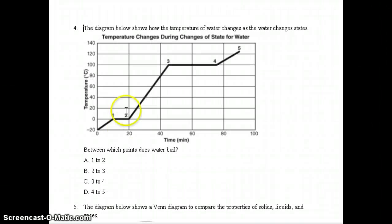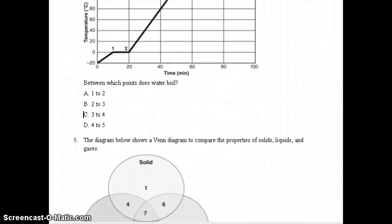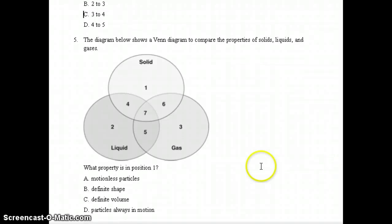Number 4, the diagram below shows how the temperature of water changes as the water changes states. Question asked, between which points does water boil? If you look at the graph carefully, you will see that water boils. If you know that it boils at 100 degrees Celsius, you see that it boils between points 3 and 4. So that should have been letter C. Number 5, it says the diagram below shows a Venn diagram to compare the properties of solids, liquids, and gases. It asks, what property is in position 1? I see up here that position 1 is a solid only. So I asked myself, what property is that only of a solid? And the correct answer should have been B, because solids are the only ones with a definite shape.